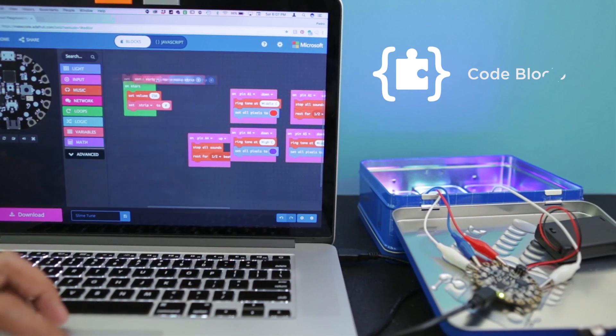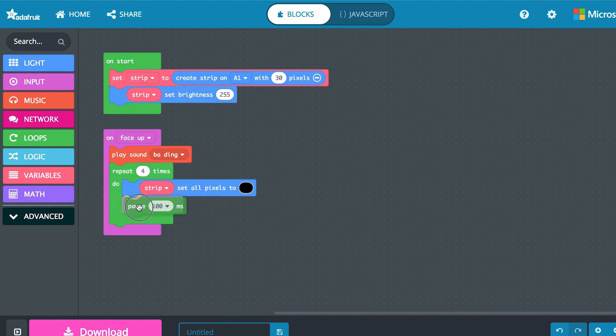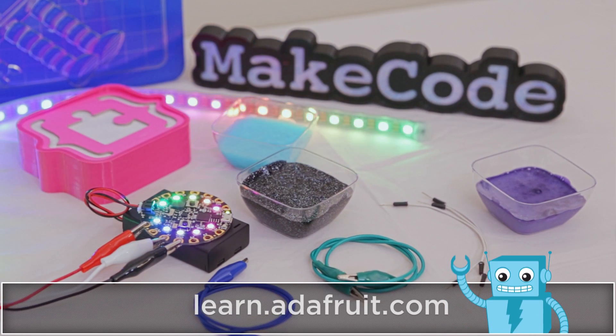MakeCode makes it easy to program the Circuit Playground Express. You can drag and drop code blocks to make interactive programs that can trigger lights and sound effects using the onboard sensors. Check out our guide on the Adafruit Learning System for details. Link is in the description.